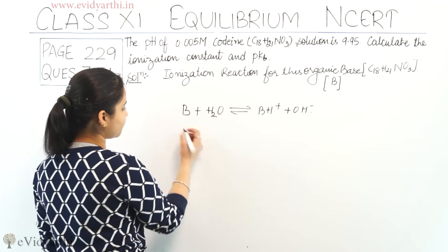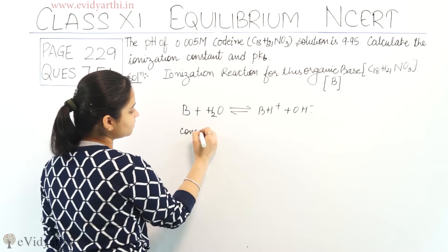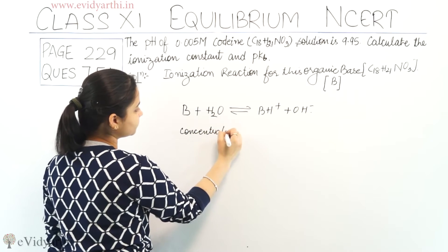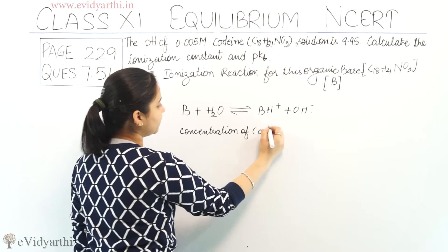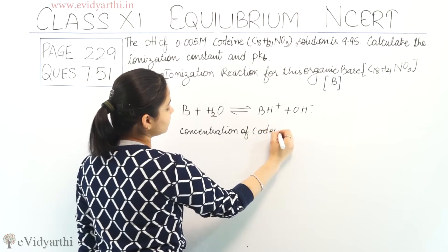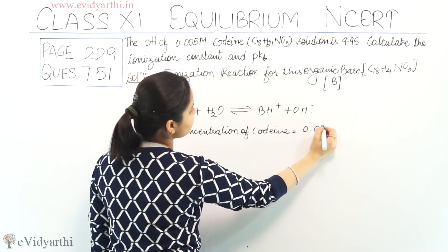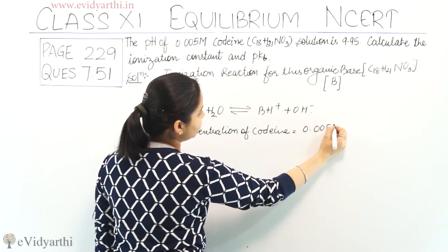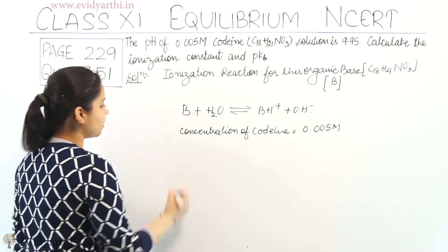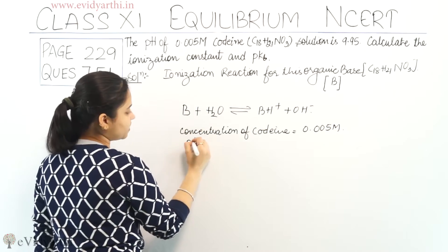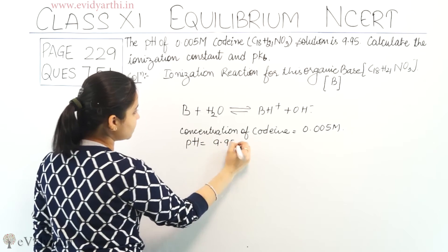We are given with the concentration of codeine, which is equal to 0.005 molar. And pH is equal to 9.95.